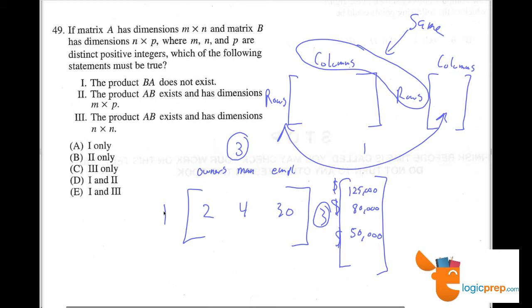There could be a scenario where I have a company, but I have a New York location and a California location. In my California location, I only have one owner, maybe two managers, and 10 employees, but I still pay them the same amount. Now I have a two by three and a three by one, and I can still multiply these two. If I multiply them, I'll have a two by one. I'll have all of the pay I have in New York and all the pay I have in California.